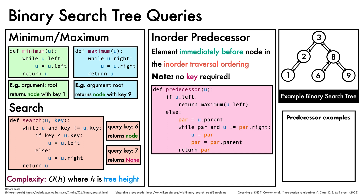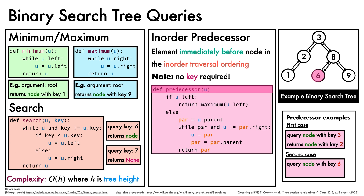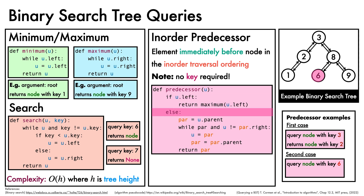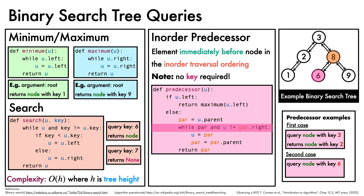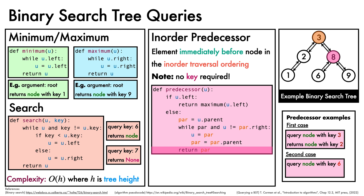Let's walk through some predecessor examples to make this concrete, starting with the first case. Suppose we want to find the predecessor of the node with key 3. We check if it has a left subtree — it does, so we run the max function on this left subtree, which returns the node with key 2. For the second case, suppose we want to find the predecessor of the node with key 6. We first check for a left subtree, which does not exist, so we jump to the else statement. We create our parent variable, which points to the parent node. We then check that the parent exists, and whether the path from node to parent points to the right. Since it does, we update the node to the parent, and update the parent to its parent. We check again that the parent exists, and whether the path points to the right. It does not — it points to the left — so we break out of the loop and return the parent as the predecessor, corresponding to the node with key 3.